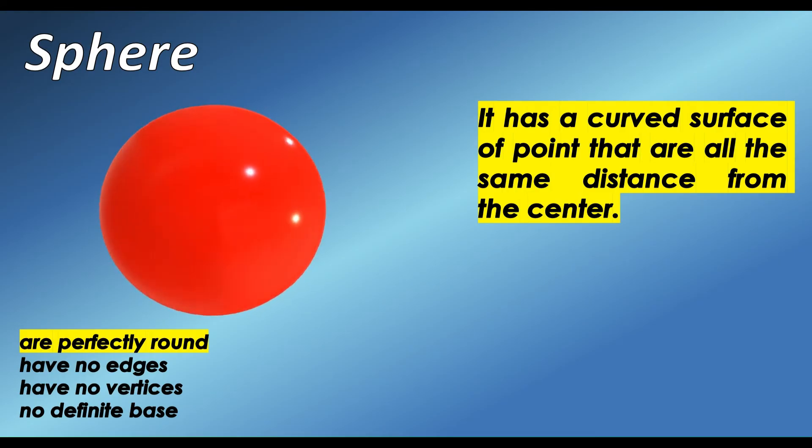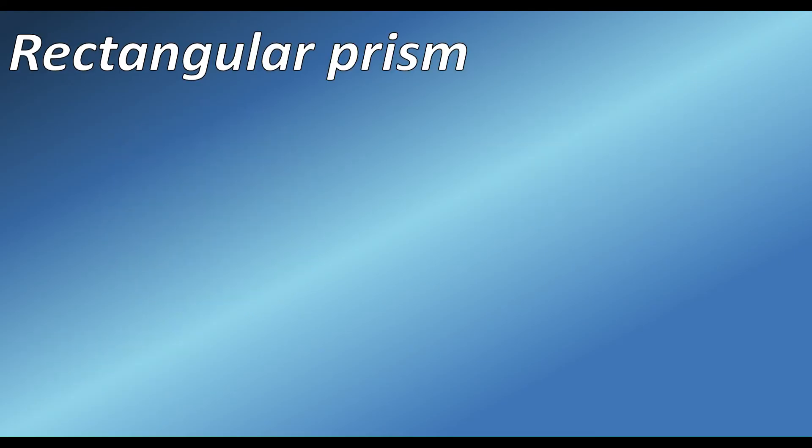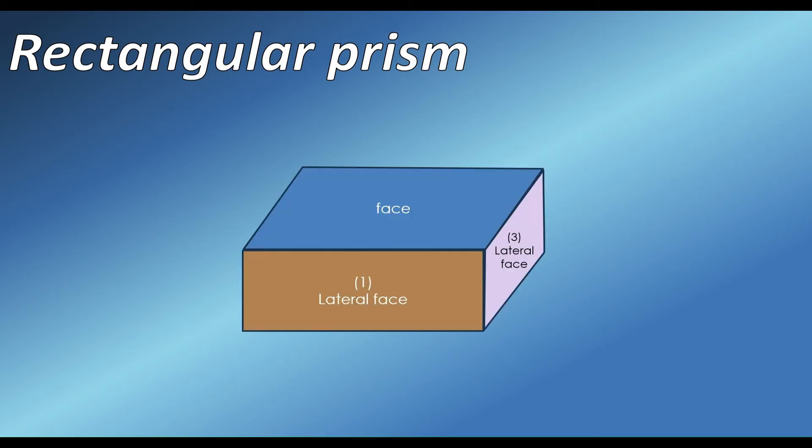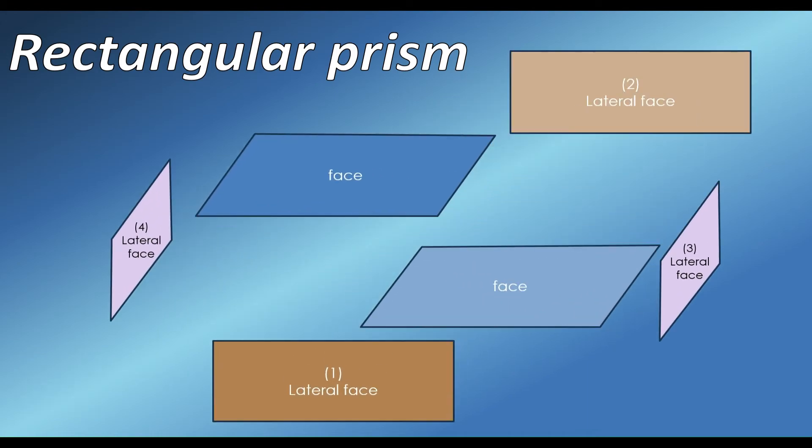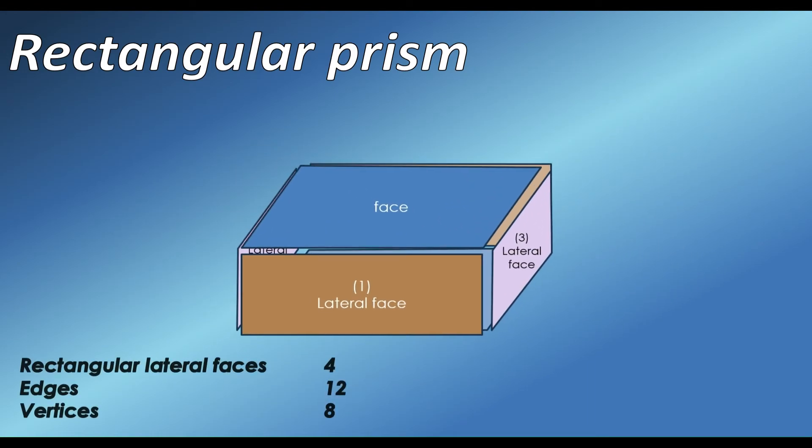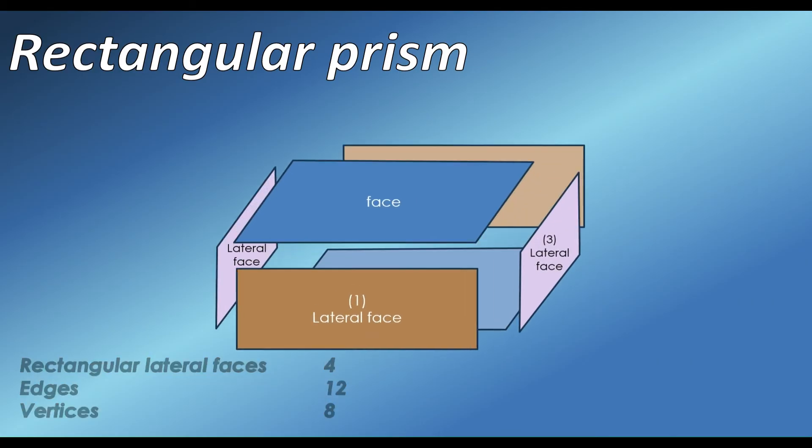We have another spatial figure, the rectangular prism. It is a three-dimensional solid object. The rectangular prism has four rectangular lateral faces with 12 edges and 8 vertices. Let's check the illustration of this solid figure.